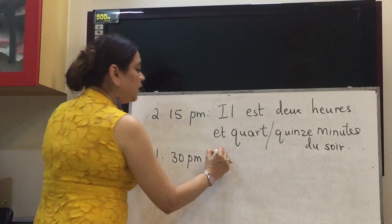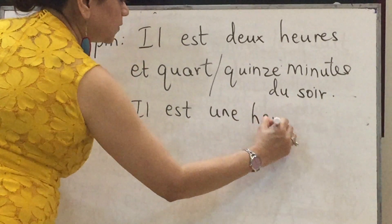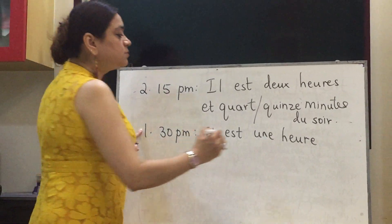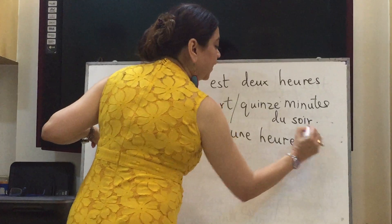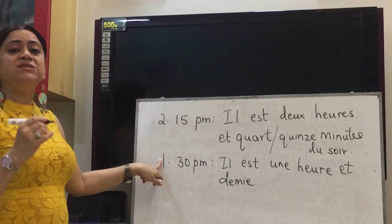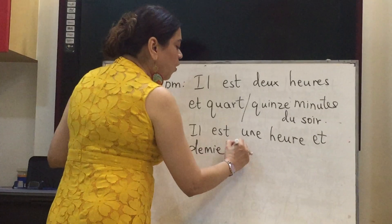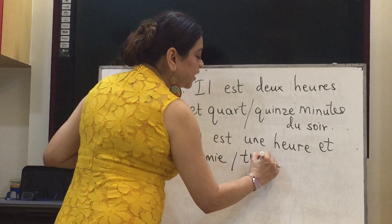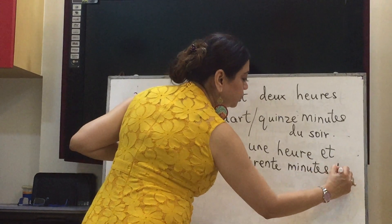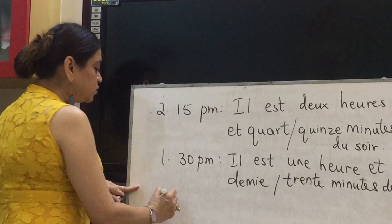If it is 1:30 P.M., you write it as 'il est une heure' — without the S because it is singular — 'et demie.' For 30 minutes we write 'et demie,' as 'demie' means half. So 'et demie' can express 30 minutes, or you can go the usual way and say 'trente minutes du soir.'